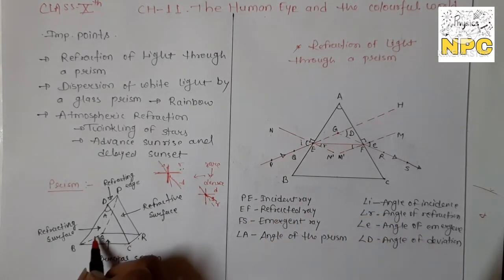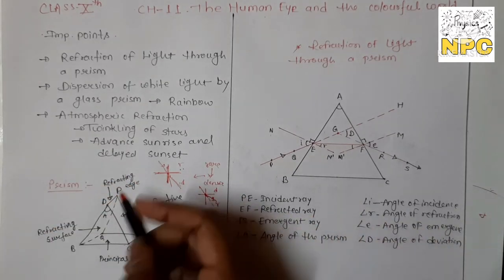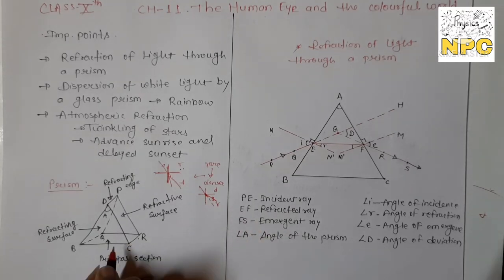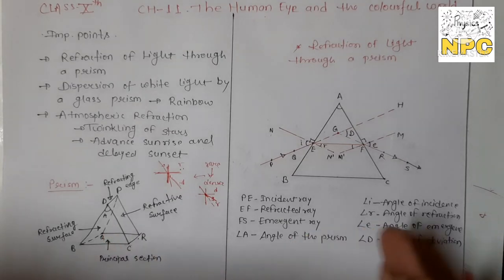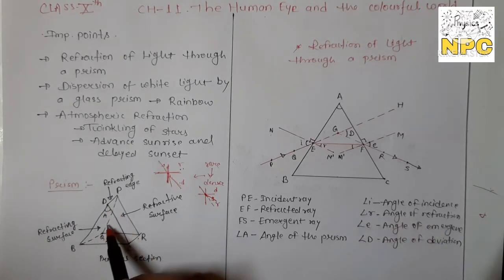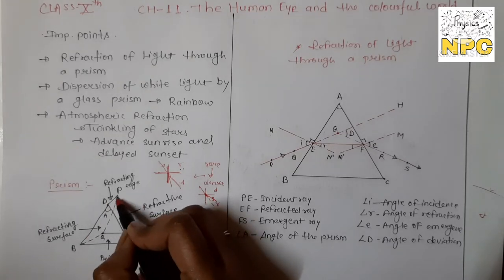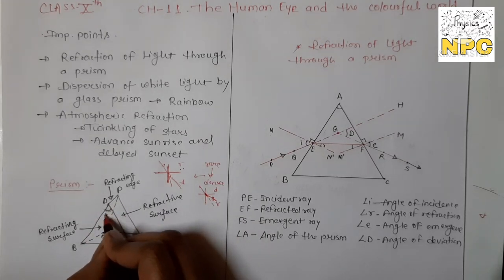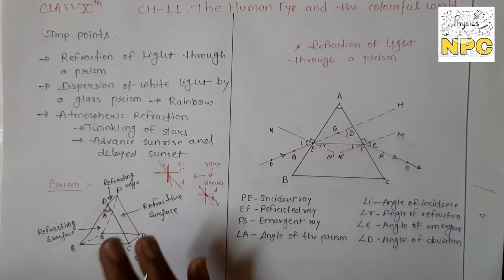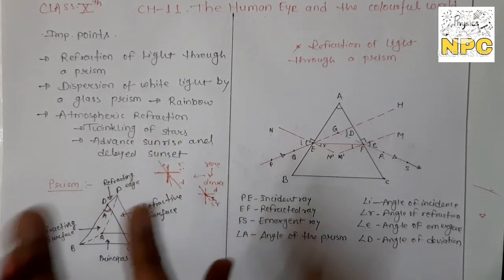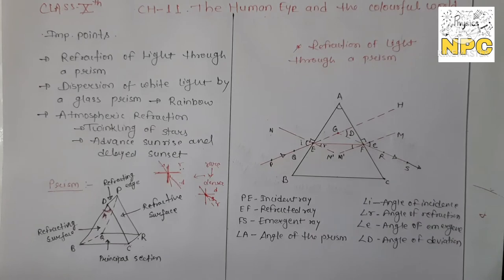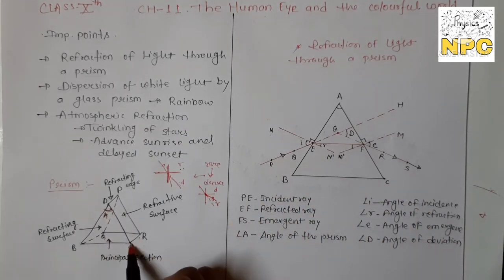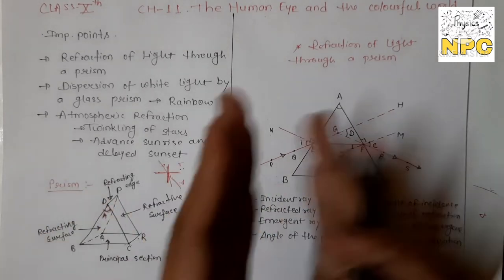This is the base section. These are the refracting surfaces, and the edge combining the two refracting surfaces is called the refracting edge. The angle between the two refracting surfaces is called the angle of prism, denoted as A. The principal section of the prism is called DBC — this is the principal section of the prism.